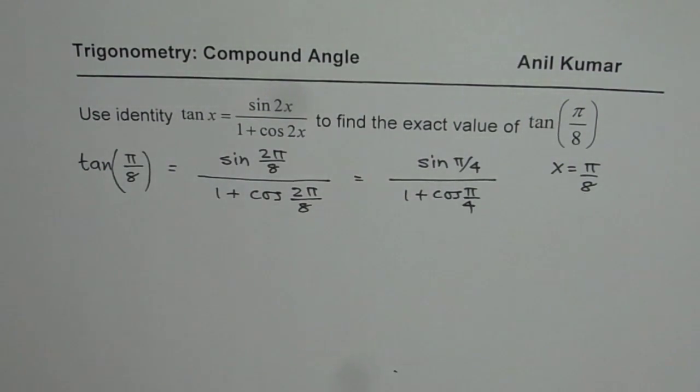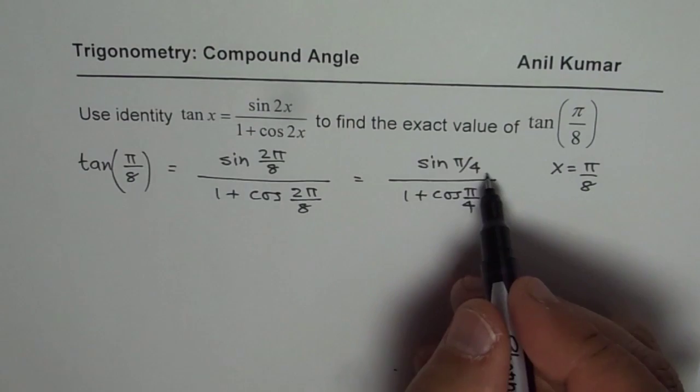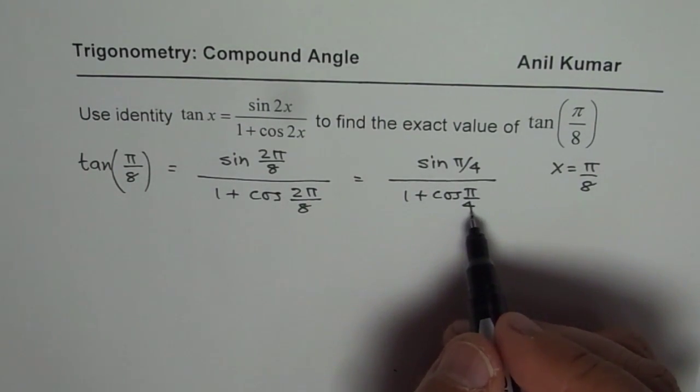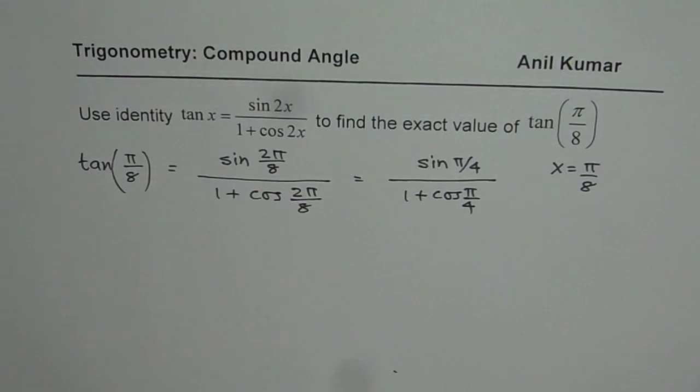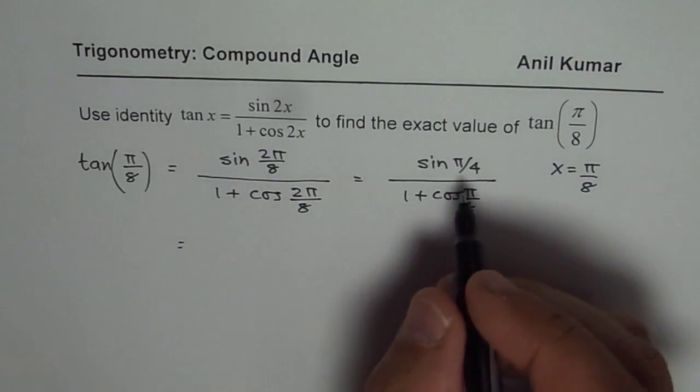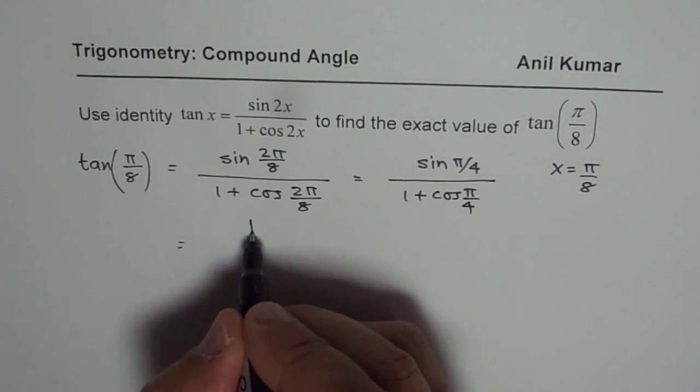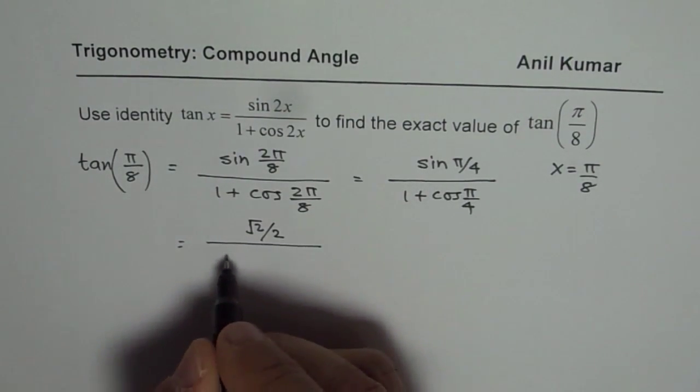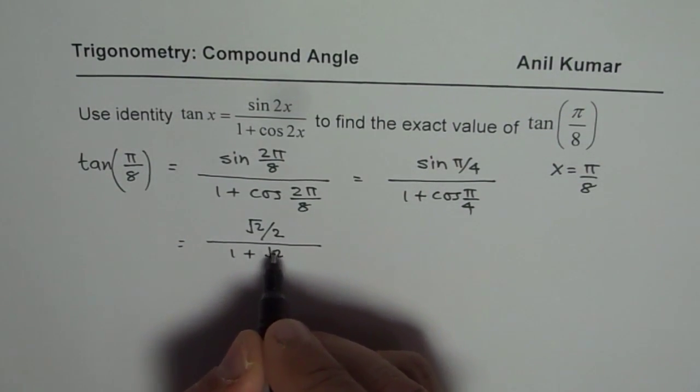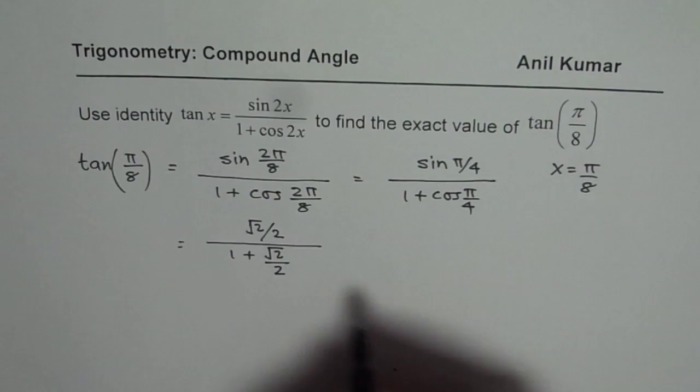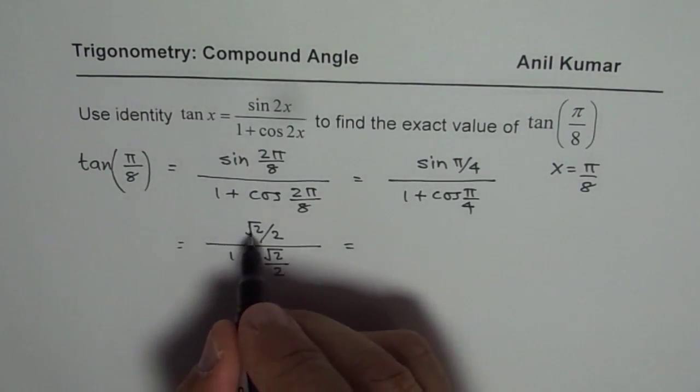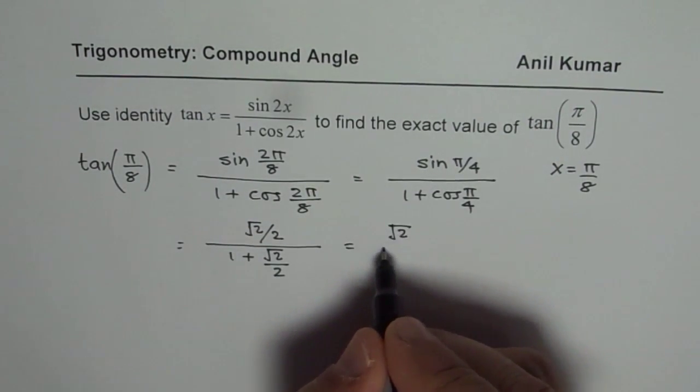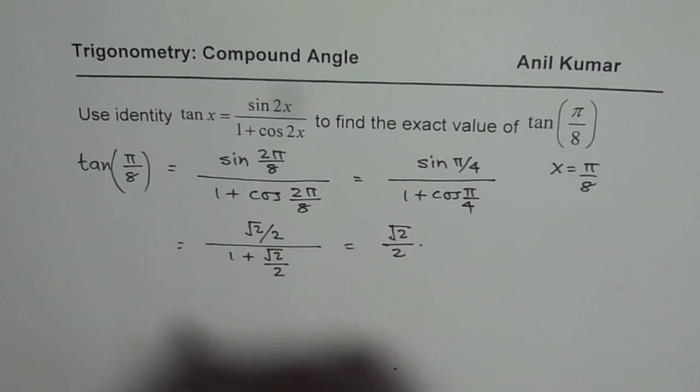And we know what sin pi by 4 and cos pi by 4 are. Sin pi by 4 and cos pi by 4 are square root 2 over 2. So we'll write square root 2 over 2 divided by 1 plus square root 2 over 2. We get here, we have square root 2 over 2. This is the first term.